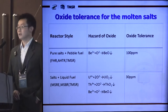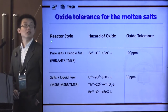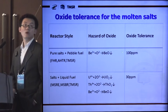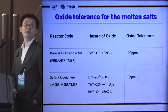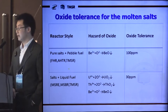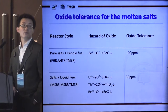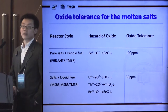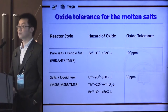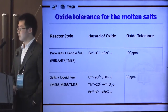Oxide impurity may not corrode the alloy directly, but it may cause other problems. In a reactor with pure salts as coolant, the oxide content in the molten salts should be controlled below 100 ppm to prevent the formation of beryllium oxide precipitation. In a reactor with liquid fuel salts as coolant, the oxide content should be controlled more strictly — below 30 ppm according to MSRE suggestions — because the solubility of uranium and thorium oxide in molten salts is much lower than that of beryllium oxide. This is a challenge for us.